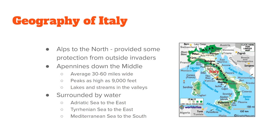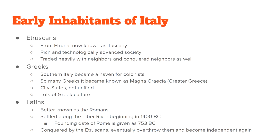There are three early groups of people you should know for your final exam: the Etruscans, the Greeks, and the Latins. The Etruscans are from a part of Italy we know today as Tuscany — originally known as Etruria. So if you go to an Italian restaurant and see something Tuscan on the menu, it's from that region.